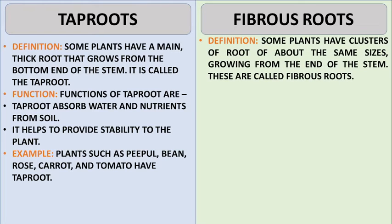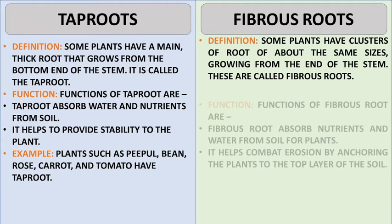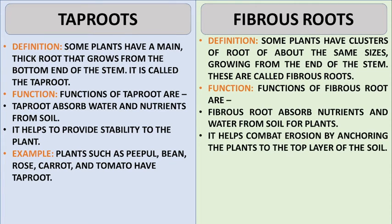Fibrous roots. Some plants have clusters of roots of about the same size growing from the end of the stem, and these are called fibrous roots. They absorb nutrients and water from the soil and help combat erosion by anchoring the plants to the top layer of the soil.